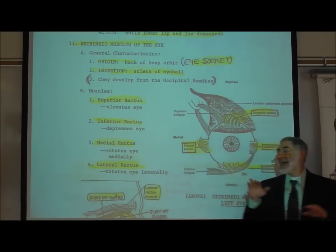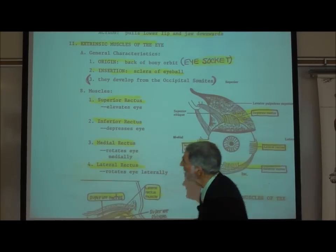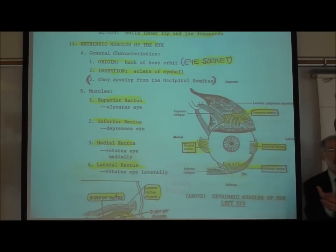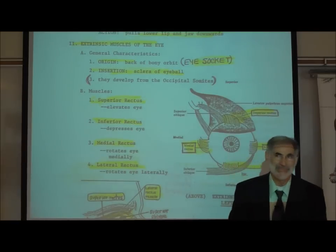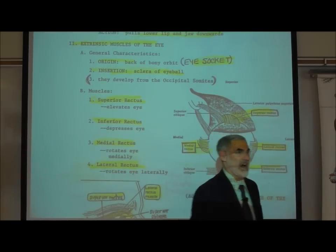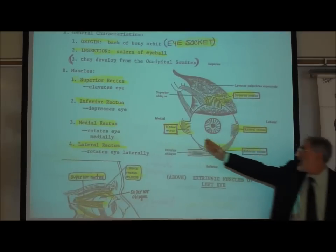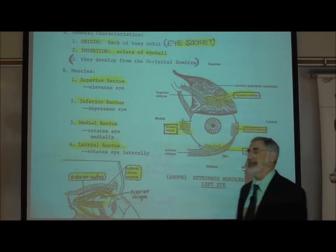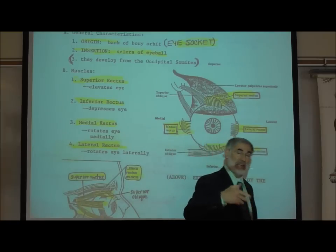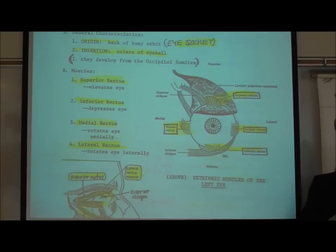The antagonist of the superior rectus — remember an antagonist has the opposite action — is the inferior rectus, which attaches on the bottom of the eyeball and rotates your eyeball down. So we can alternately rotate our eyes upwards or downwards. There is also a medial rectus that rotates the eye medially towards the midline, and a lateral rectus that rotates it outwards. They are antagonists of each other.